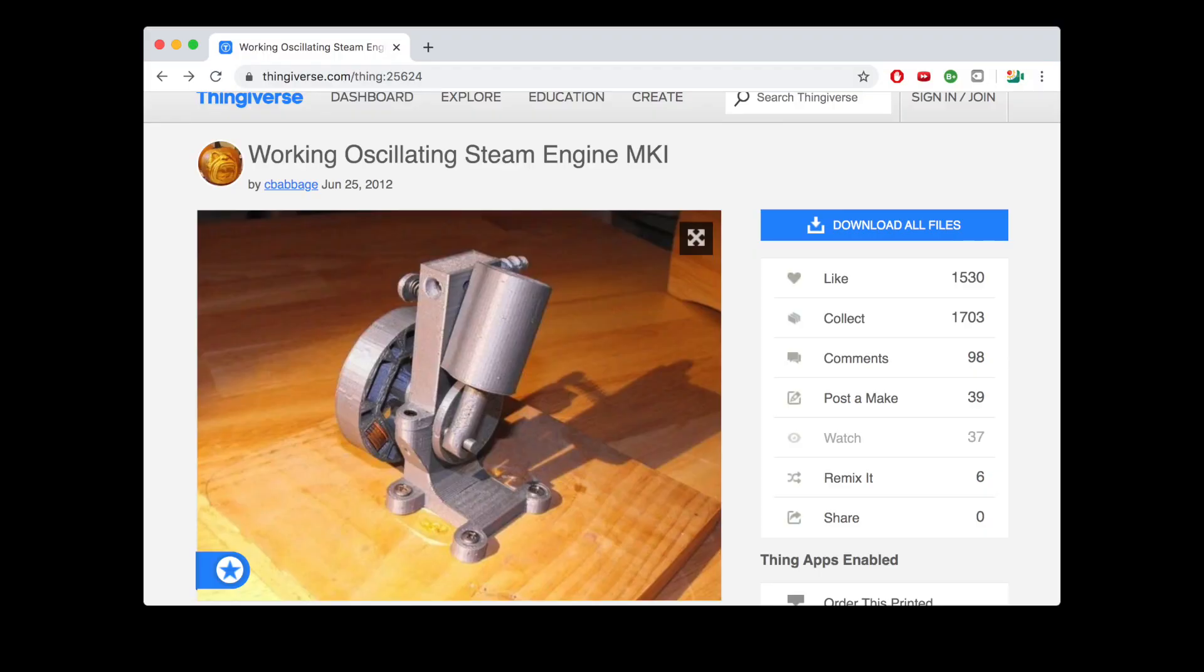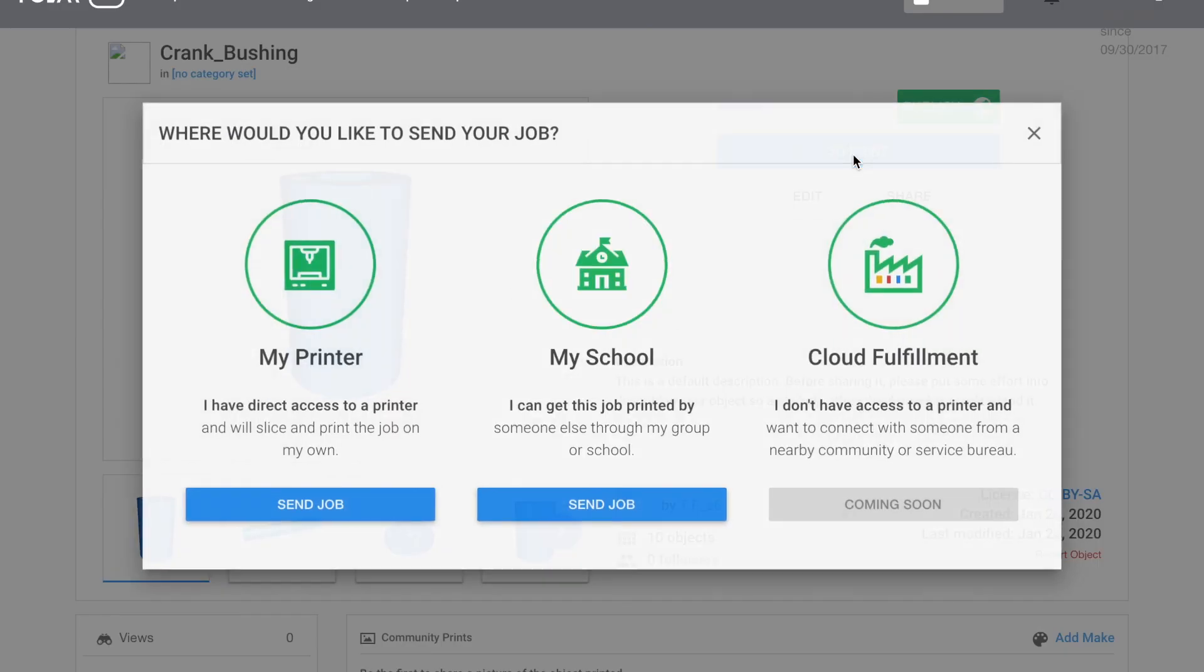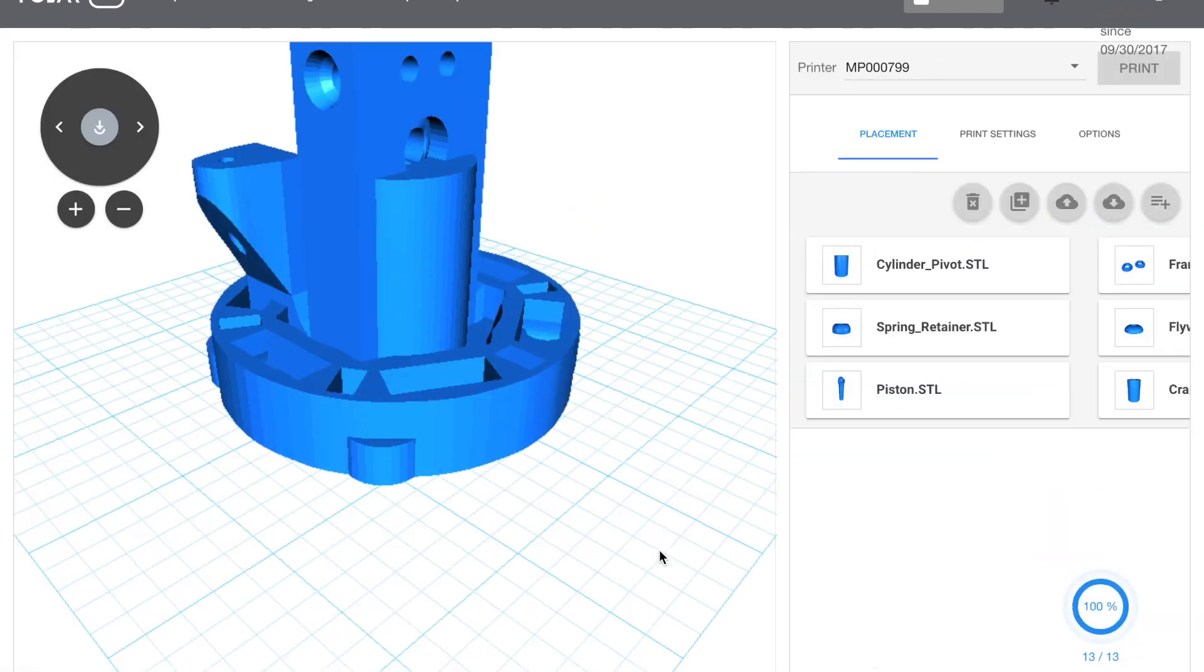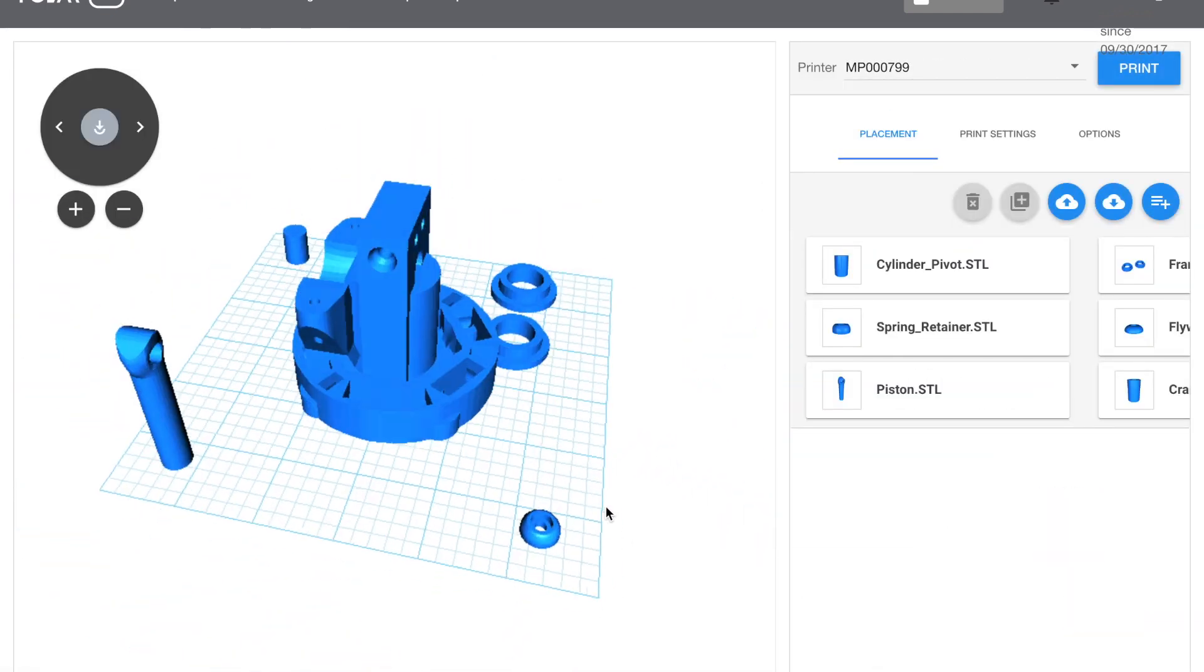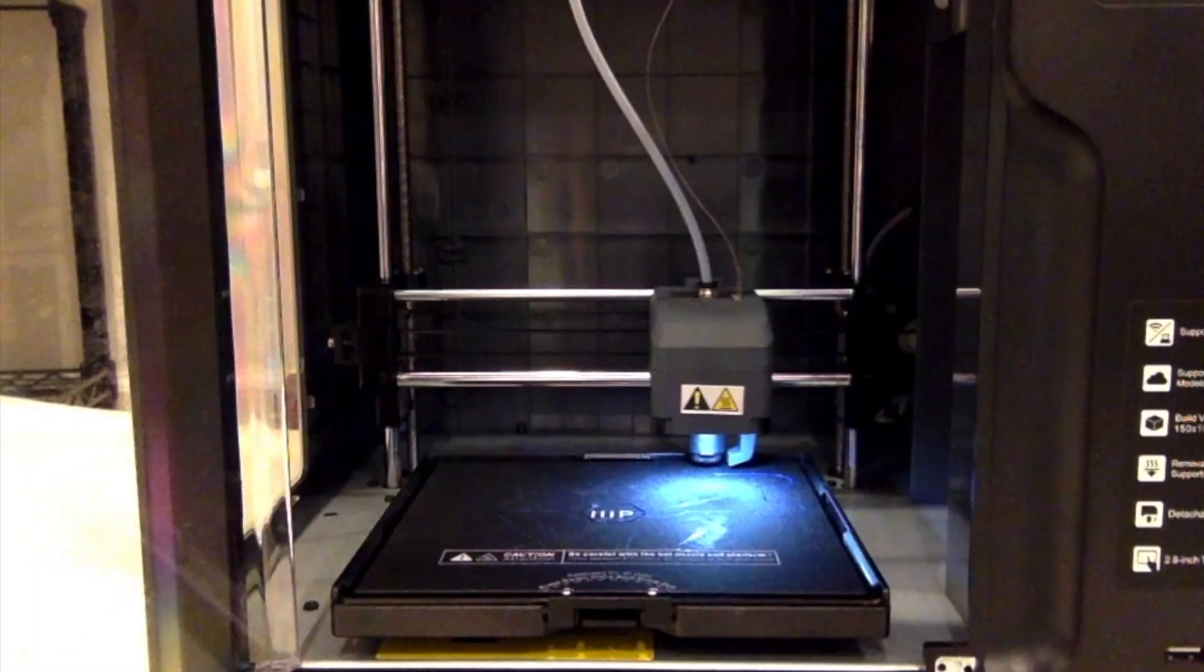I headed over to Thingiverse where you can find tons of STL files ready to print. I found this design from Charles Babbage and downloaded the parts. I arranged the pieces so that they would all print in one go without overlapping and adjusted the print settings. Then I sent the data to 3P, who spent the next several hours printing them out.